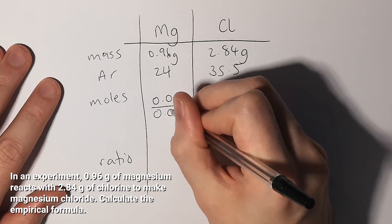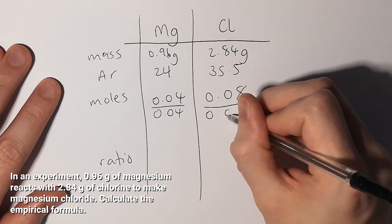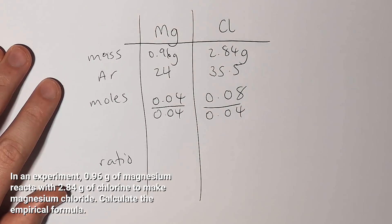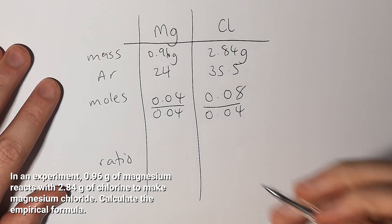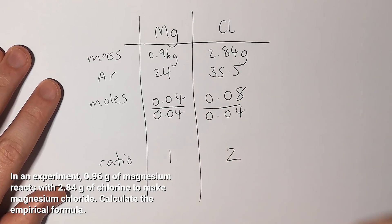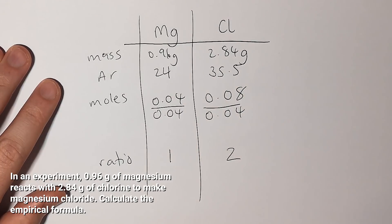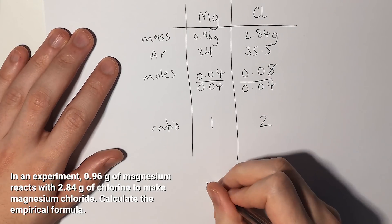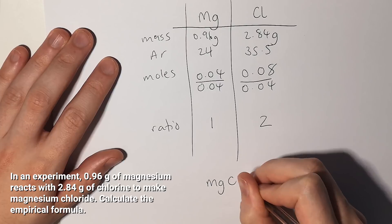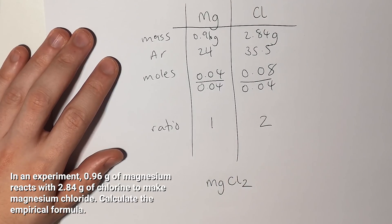I have to divide both of these by the smallest value, 0.04, because I'm trying to get the simplest whole number ratio. This gives me a value of 1 and this gives me 2. So my ratio is 1 to 2, meaning for every one magnesium I have two chlorines.